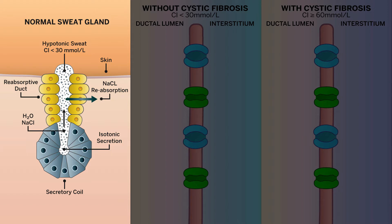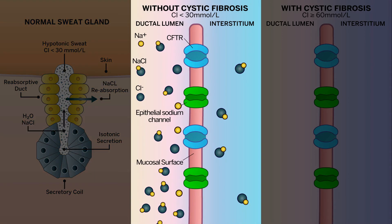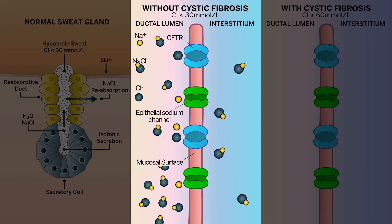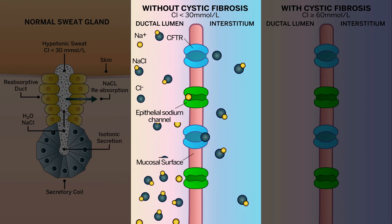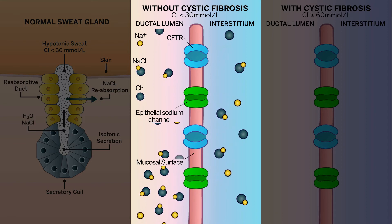Cells lining the reabsorptive duct contain CFTR and sodium channels. As fluid passes through the reabsorptive duct, chloride and sodium are moved from the lumen into the interstitium. In people without cystic fibrosis, who have normally functioning CFTR, most of the chloride is reabsorbed back into the body. Sodium also moves in through sodium channels.